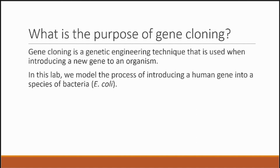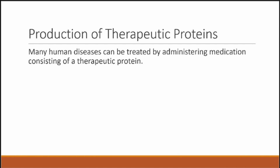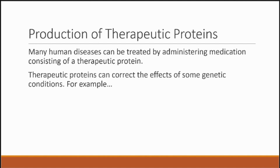Now before we get into the nitty-gritty details of how this works, let me first pose to you the question: why would anyone want to do this? Why would anyone want to take a piece of DNA, a gene from a human, and put it into a totally different organism — a bacterium, E. coli? The answer is the production of therapeutic proteins. There are a lot of human diseases out there that can be treated by administering medications that consist of a therapeutic protein — the medication itself is actually a protein. This is the case when a disease is a genetic disorder that results in a person's body producing a non-functional protein or not producing enough of a certain protein. Therapeutic proteins can correct the effects of some of these genetic conditions.